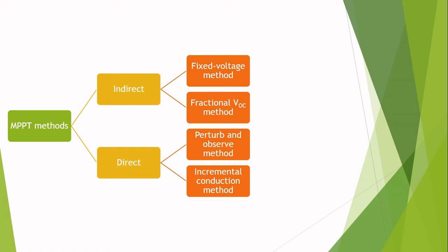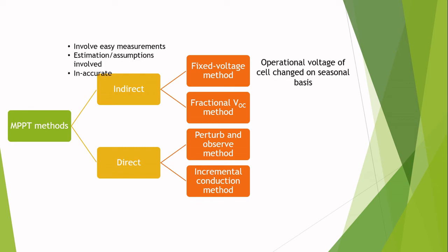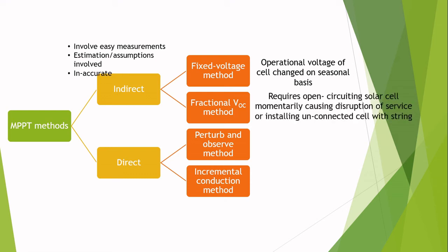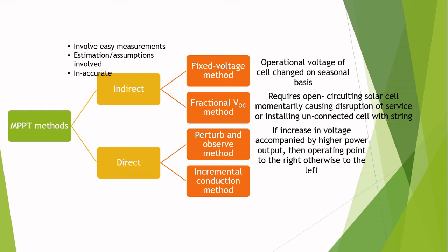In constant voltage maximum power point tracking, also known as the open voltage method, the power delivered to the load is momentarily interrupted and the open circuit voltage with zero current is measured. The controller then resumes operation with the voltage controlled at a fixed ratio. These fixed ratios usually change with different scenarios. It requires open circuiting the solar cell momentarily, which causes a disruption of operation.